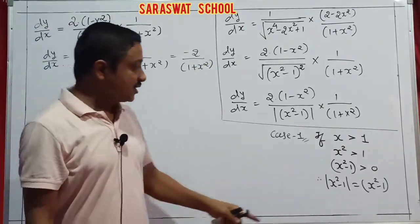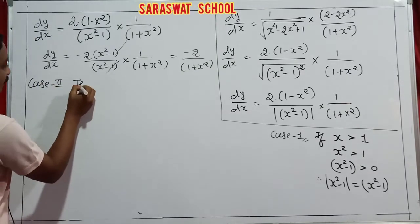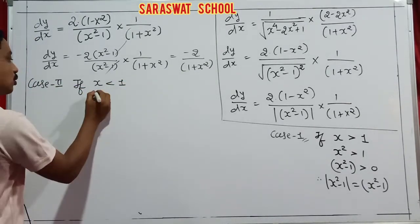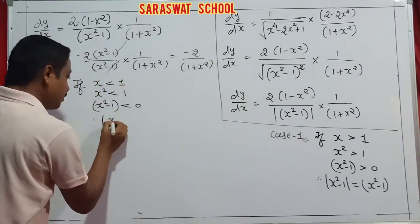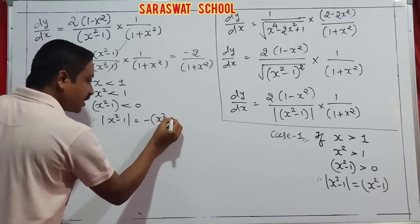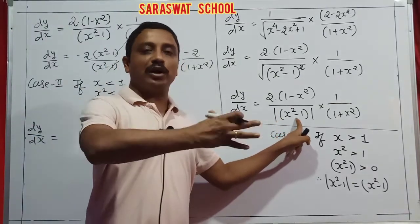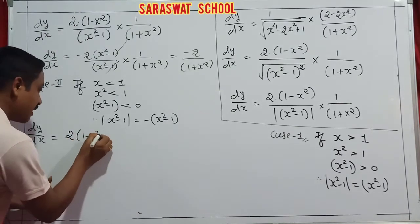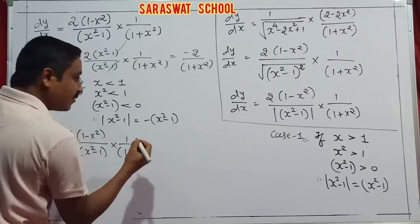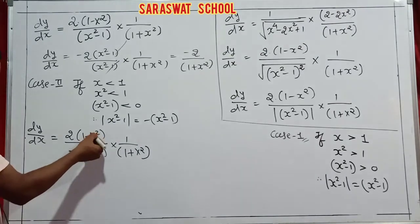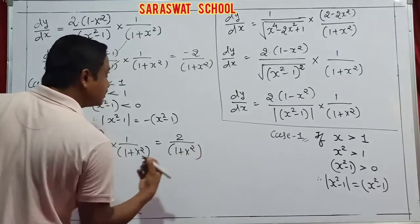Case 2 (negative, x < 1): modulus |x²-1| = -(x²-1). So dy/dx = 2(1-x²) / [-(x²-1)·(1+x²)]. The (1-x²) and -(x²-1) cancel, leaving dy/dx = 2/(1+x²). That is the second case answer.